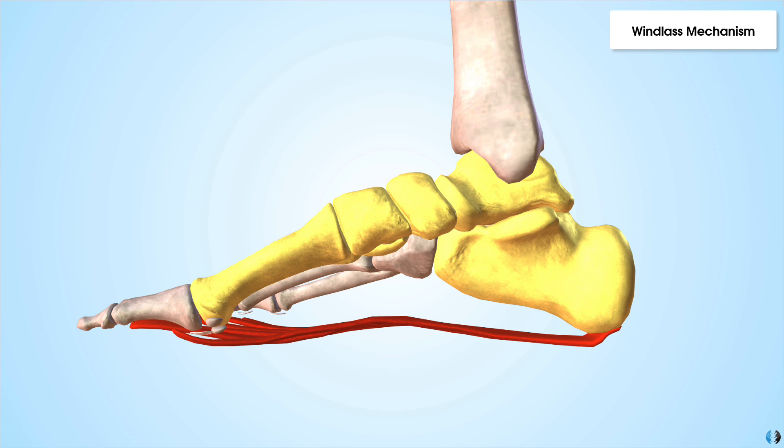So a windlass is defined as the tightening of a rope or a cable. And so the plantar fascia acts as a cable attached between the calcaneus and the metatarsophalangeal joints. So in the propulsion phase of gait, as we extend the metatarsophalangeal joint, this in turn winds the plantar fascia around the metatarsal heads. This therefore shortens the distance between the calcaneus and the metatarsal heads.